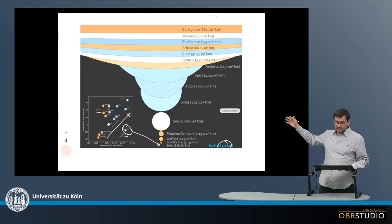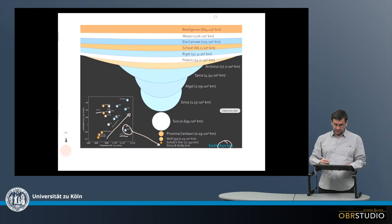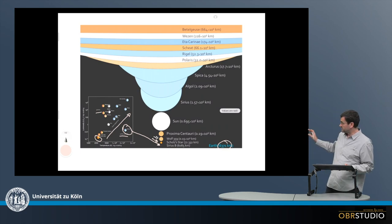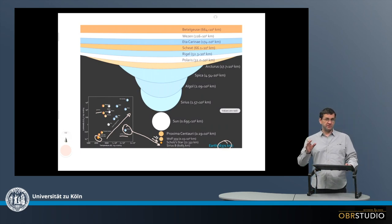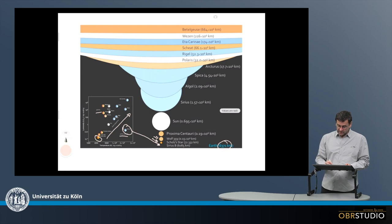There are all these other stars at various places in the HRD diagram. A star a little bigger than Sirius B is Scholz's star, which is at the beginning of the main sequence. The same for Wolf 359, big defeat against the Borg there. Proxima Centauri, the closest star to our own, and then there is the Sun.